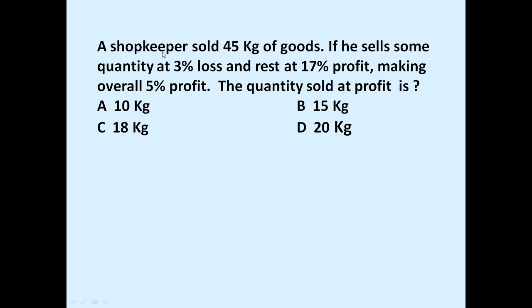The given problem is: a shopkeeper sold 45 kg of goods. If he sells some quantity at 3% loss and the rest at 17% profit, making an overall 5% profit — how many kg did he sell at profit? Out of 45 kg, he sold some quantity at loss and some at profit so that his overall profit is 5%. How much quantity did he sell at profit?